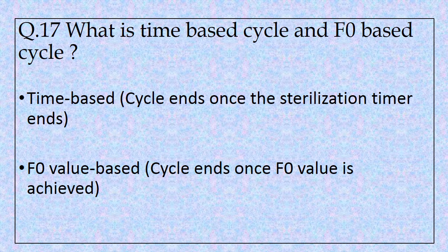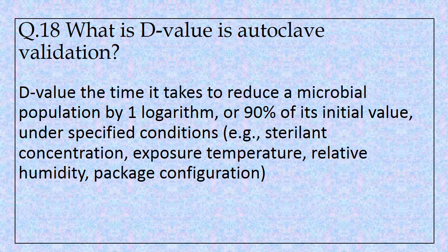Question number seventeen: What is a time-based cycle and an F0-based cycle? Modern autoclaves are enabled with two function cycles: the time-based cycle and the F0-based cycle. Time-based cycles end once the set timer is reached, and the F0-based cycle ends when the F0 value is achieved. Question number eighteen: What is D value in autoclave validation? The D value is the time taken to reduce the microbial population by one logarithm — that is, one log reduction or 90% of its initial value — under specified conditions of sterilant concentration, exposure, temperature, relative humidity, and package configuration.